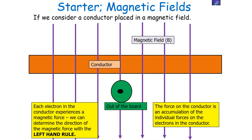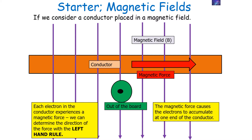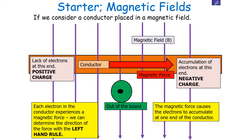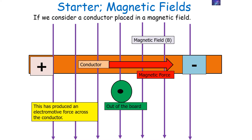Each electron in the conductor experiences its own magnetic force, and we can determine the direction of the magnetic force by use of the left-hand rule. The magnetic force will cause the electrons to accumulate at one end of the conductor, and there'll be a lack of electrons at the other end. So at one end of the conductor we'll have a positive charge, and on the other end we'll have a negative charge, as shown here. In essence, an electromotive force has been produced across the conductor — we say there's an induced EMF in the conductor.